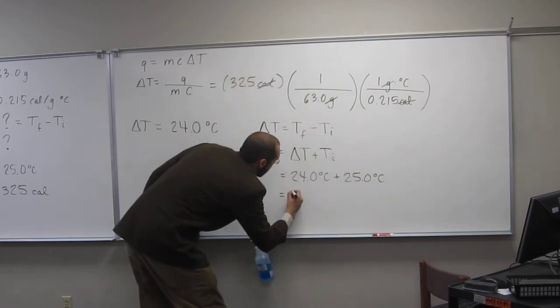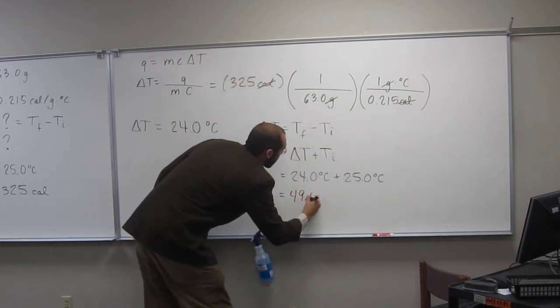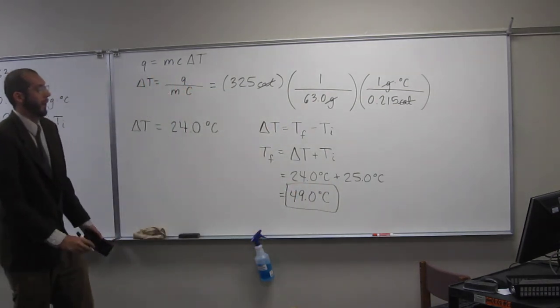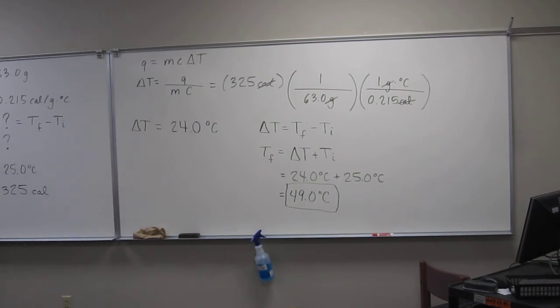So, change of T is 24.0 degrees C plus Ti is 25.0 degrees C. So, that's going to be 49.0 degrees C. So, the final temperature of that is going to be 49.0 degrees C.